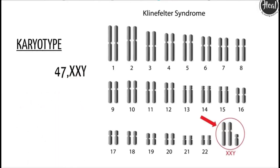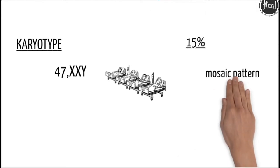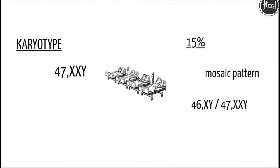Most affected patients have 47-XXY karyotype. Approximately 15% of patients show mosaic pattern including 46-XY over 47-XXY or 47-XXY over 48-XXXY.